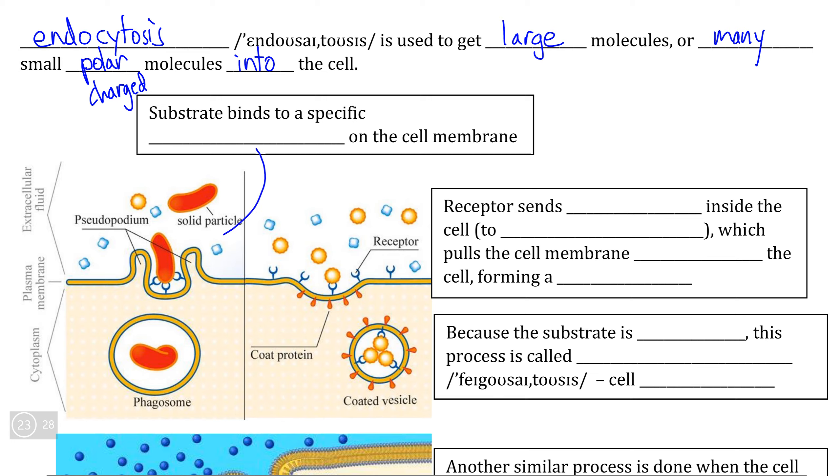As we can see in both diagrams here, these substrates are binding to specific receptor proteins on the surface of the cell membrane. So this process is hardly indiscriminate in that even large particles or multiple smaller particles still need receptor substrate complementarity in order to bind to the specific receptor protein and send signals into the cell.